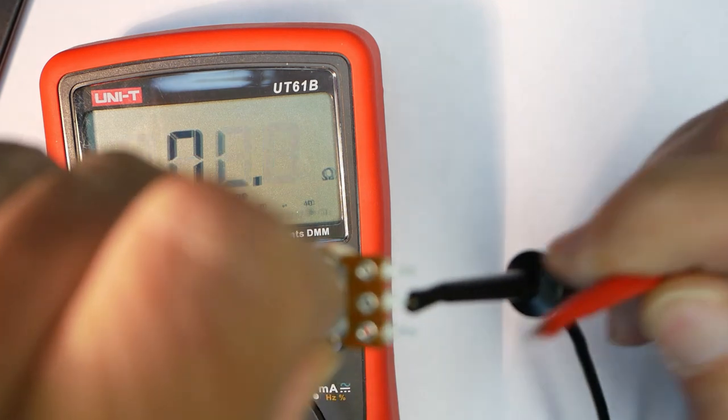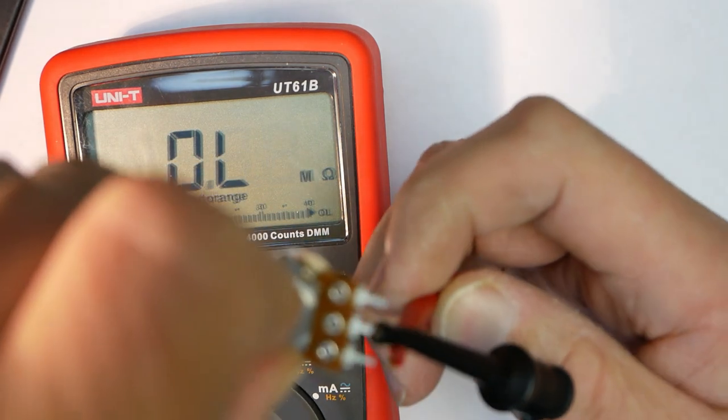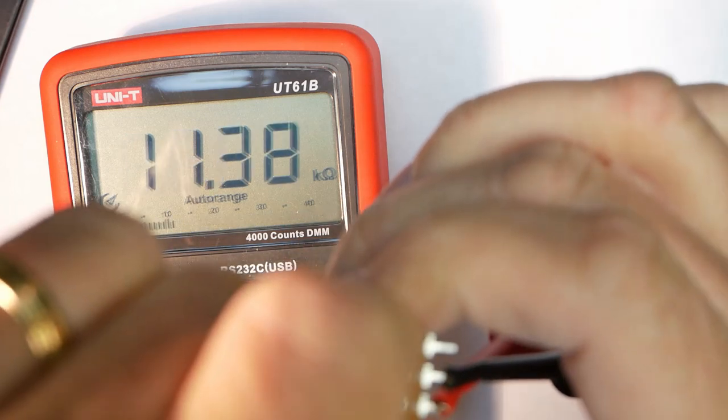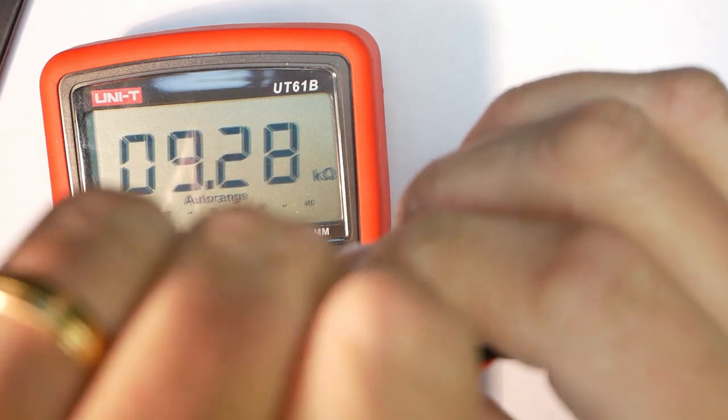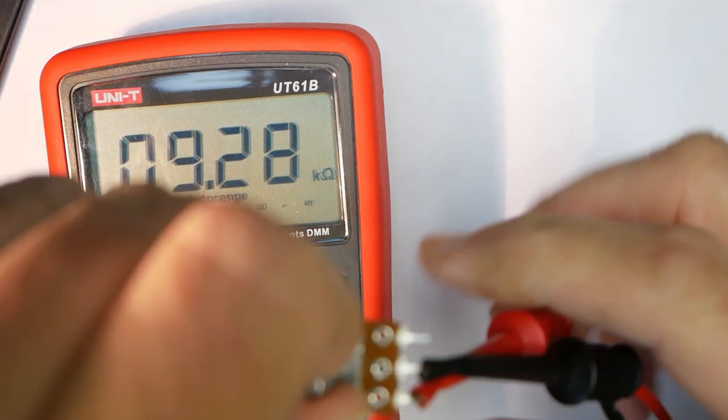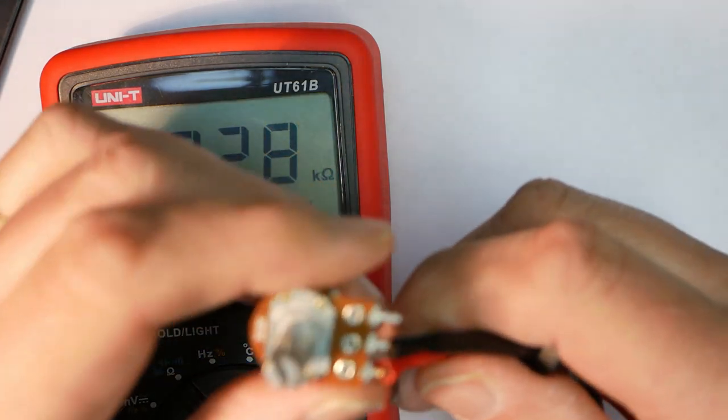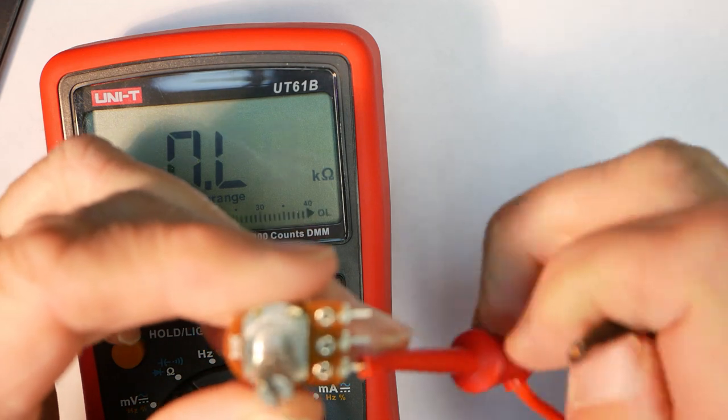And then we can measure on this side, keeping it in the same position, and you see that we get the maximum resistance. So that's how it works externally.